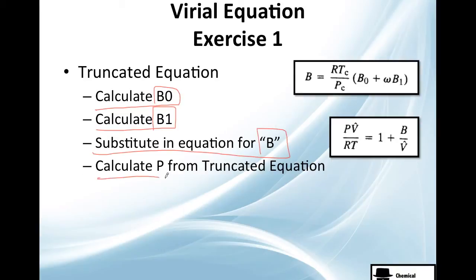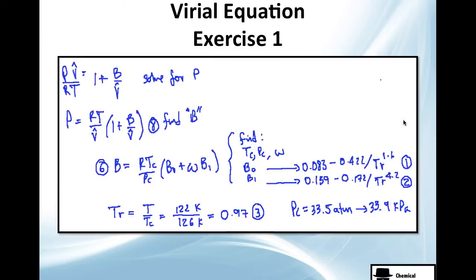Let's do it. B0, B1, and then B, and then we calculate pressure. So we have this, this is the truncated equation, we're going to solve for P, which is very nice because we can actually have one variable equation. We'll do this, and this factor stays the same, and of course the only thing we have left to do is find B.